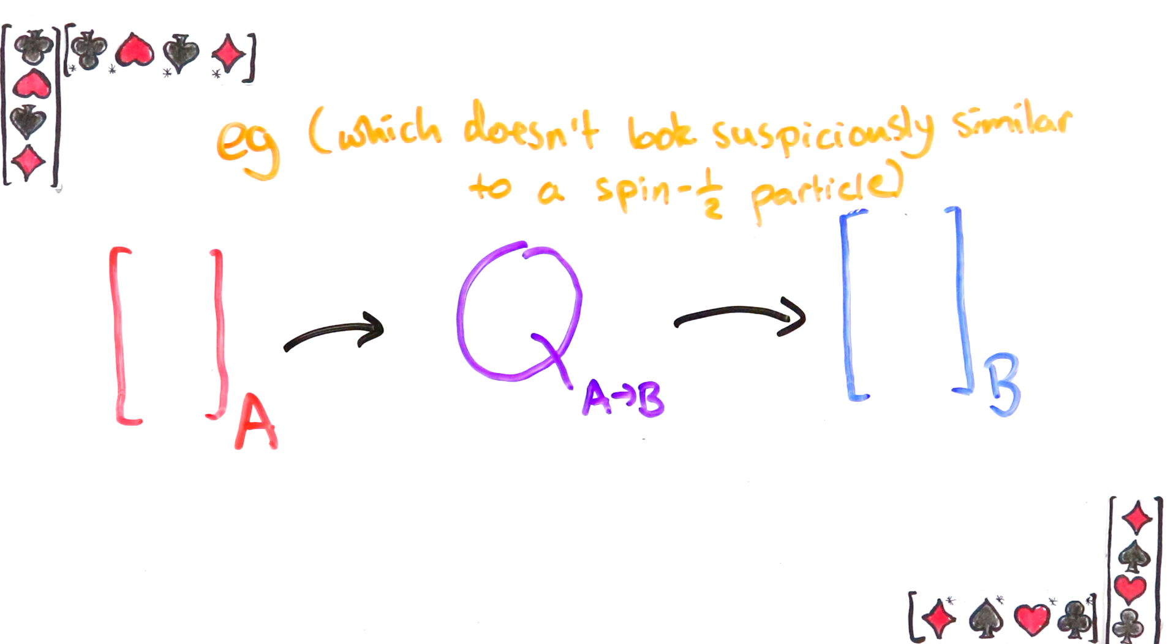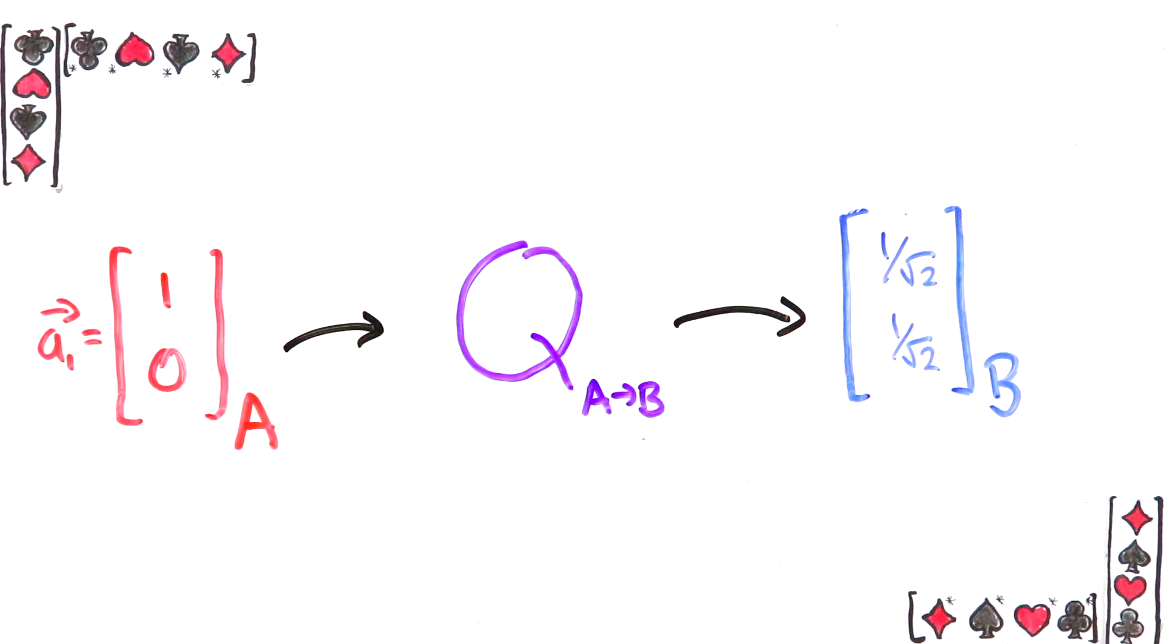Going back to our example, Alice knows that her first basis vector is written like this in Bob's basis. From this fact alone and not from any calculations, work out what the first column of the change of basis matrix should be. Pause the video and give yourself a minute to think about it.